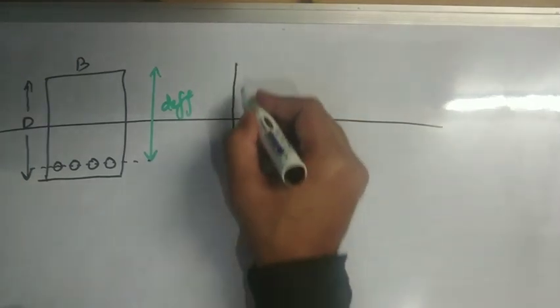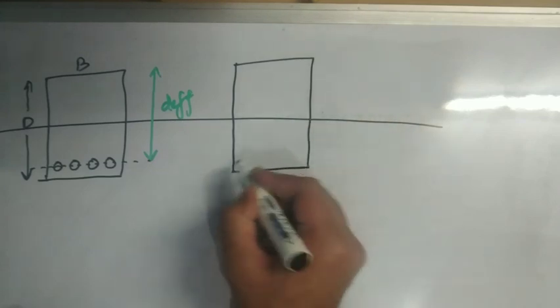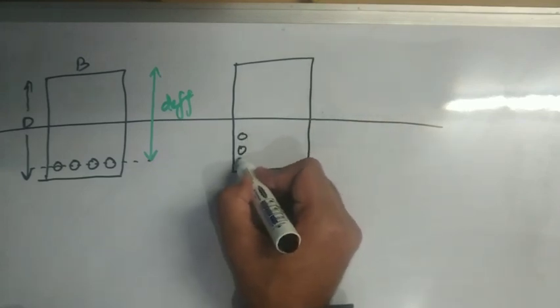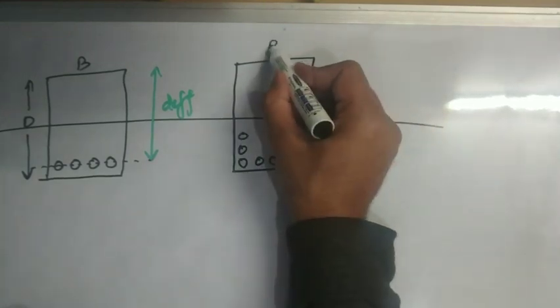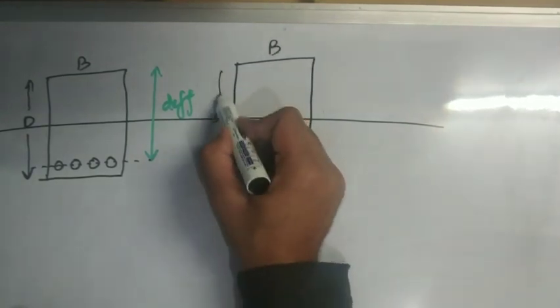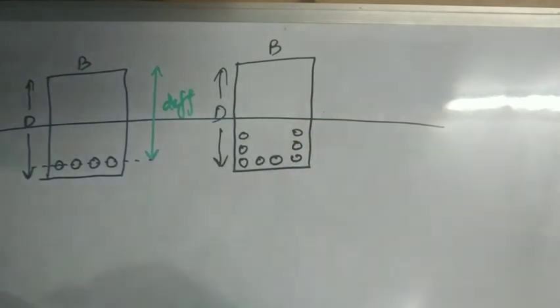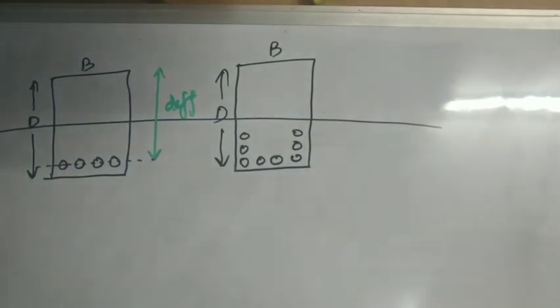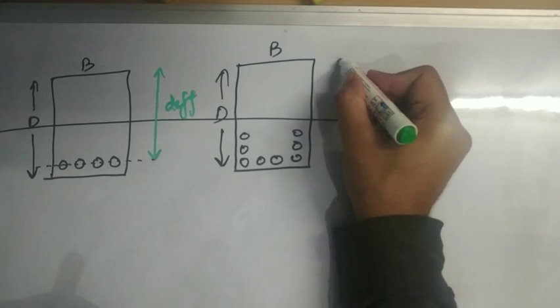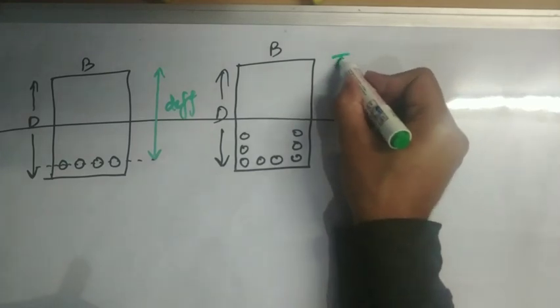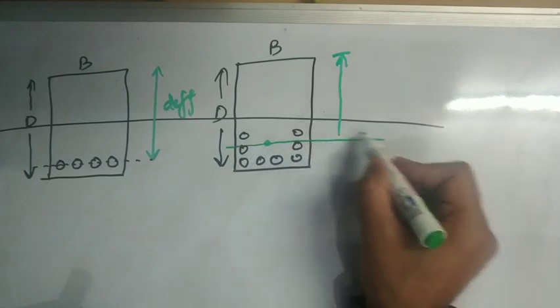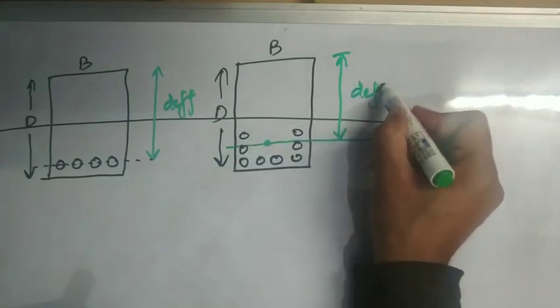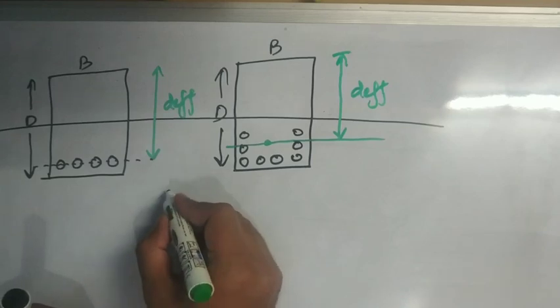But what will be the effective depth in case of a beam having this type of tension reinforcement with multiple bars? In this case, the effective depth will be depth from the topmost compression fiber to the center of gravity of the tensile reinforcement. So this is an important point to be noted here.